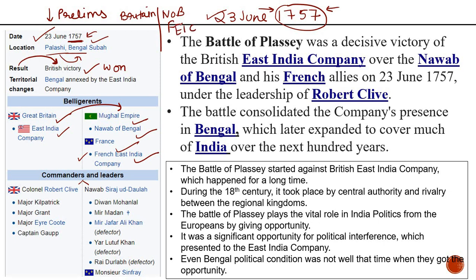The troubles between Sirajuddaula and the Britishers led to the Battle of Plassey. During the 18th century this battle took place due to rivalry between the regional kingdoms and the decline of central authority. Sirajuddaula was against the Britishers. The Battle of Plassey played a very important role in Indian politics because here Europeans — the French and the Britishers — wanted to control India. Sirajuddaula was supported by the French East India Company, who wanted to outthrow the Britishers. It was a very important opportunity for political interference.